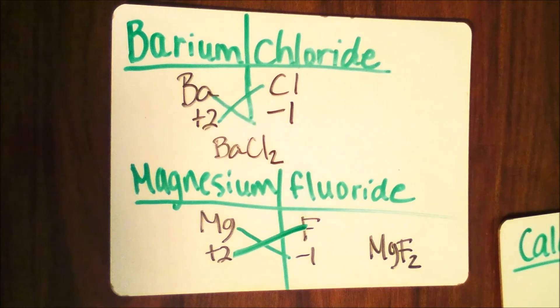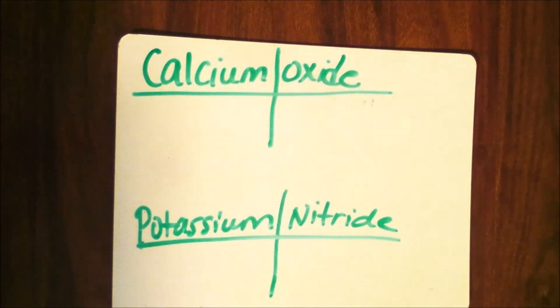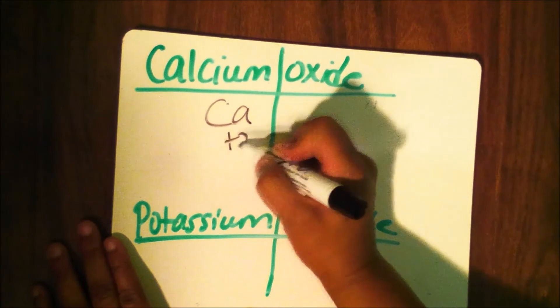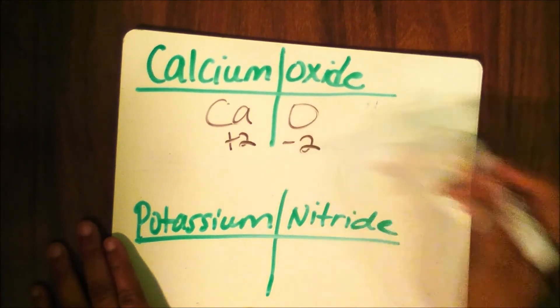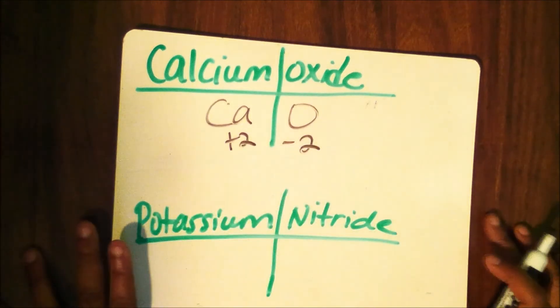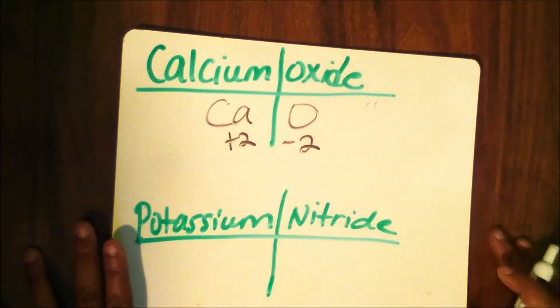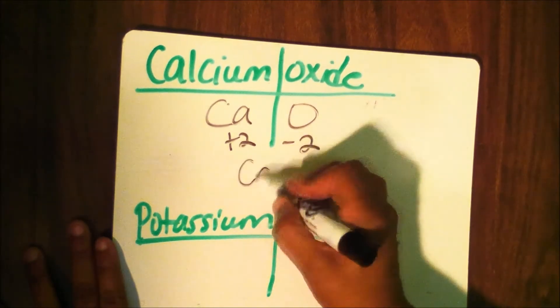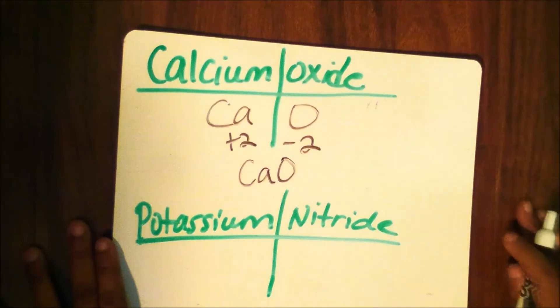The next example is calcium oxide. Look at your periodic table and find the charges. Calcium has a plus 2 charge, and oxygen has a negative 2. The rule in chemistry states that when the charges are the same, they cancel each other out. So I simply get CaO.